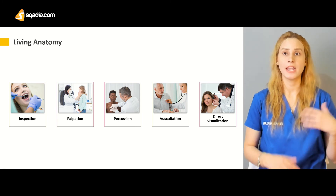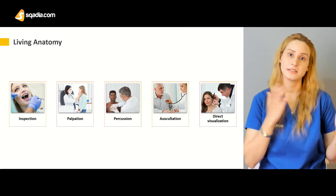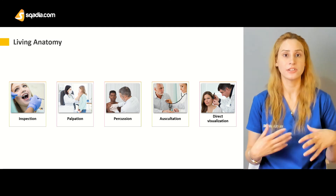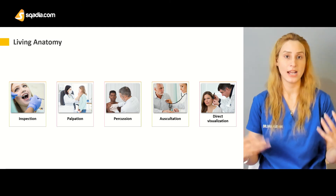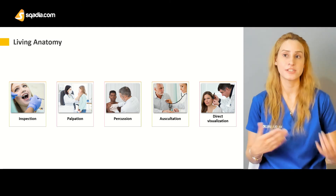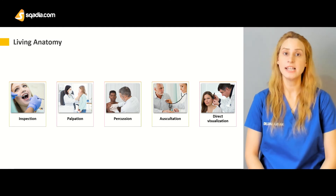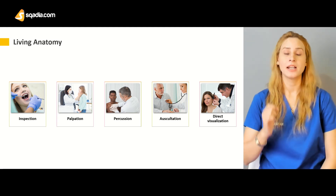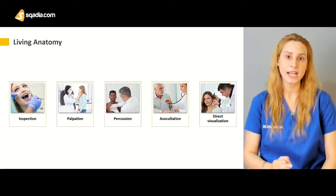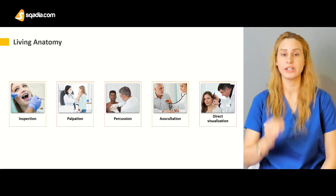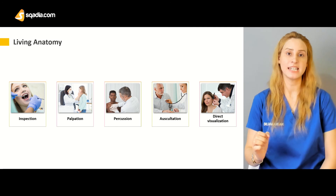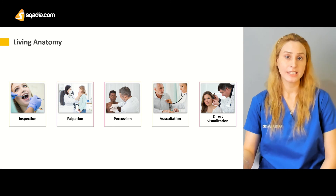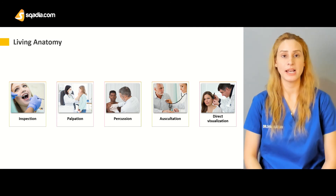Cadaveric anatomy involves studying on a dead body through dissection, while living anatomy involves examining a living being to look for signs and symptoms of a particular disease to make a proper diagnosis. These are the subdivisions of anatomy, and you should have accurate knowledge of anatomy so that if you're performing any surgery, you know each and everything — including the developmental anatomy and what changes to expect in a body.